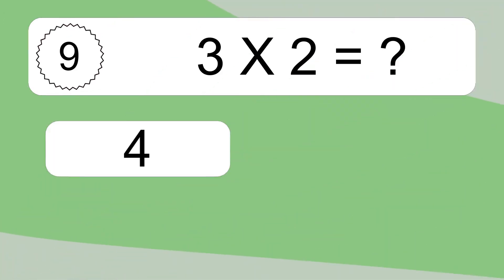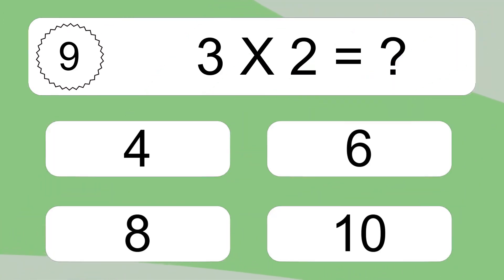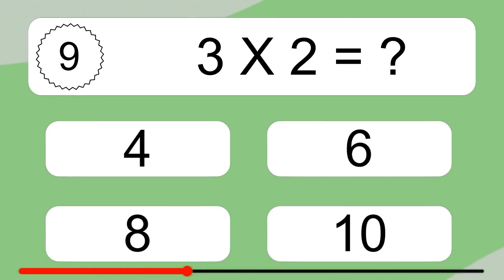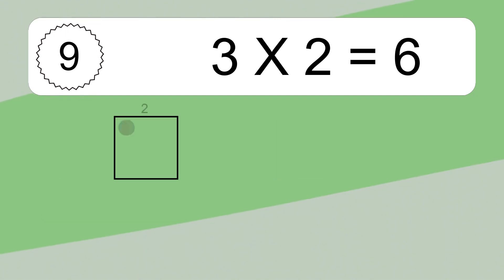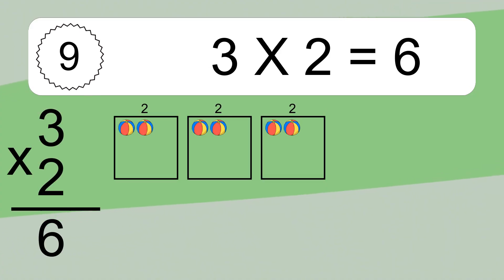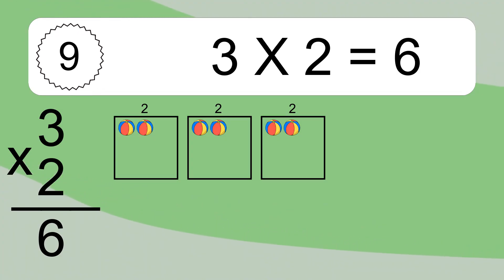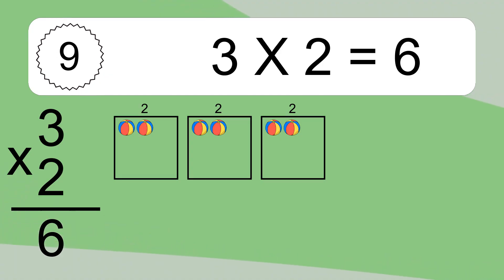3 times 2 equals what? 3 times 2 equals 6. We have 3 boxes, and each box has 2 colorful balls inside. If you count all the balls in all the boxes together, you will have 3 times 2 balls. This equals 6 balls.